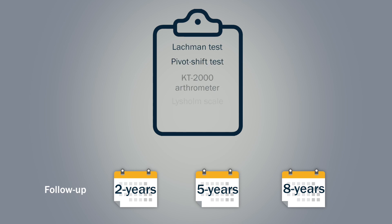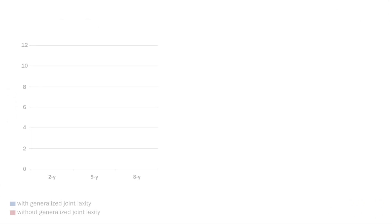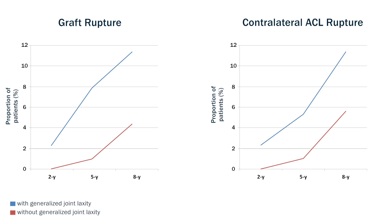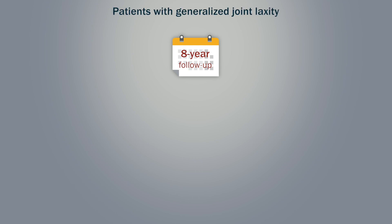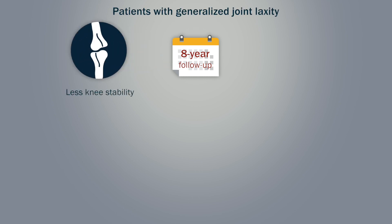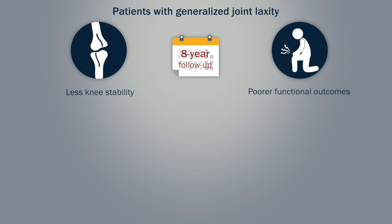Data from knee stability tests and functional outcomes were collected at follow-up examinations. The researchers found that the rates of graft rupture and contralateral ACL injury in patients with generalized joint laxity were higher than in those without generalized joint laxity during the whole study period. However, the cumulative rupture rates did not reach statistical significance. At the eight-year follow-up, patients with generalized joint laxity had less knee stability and poorer functional outcomes.